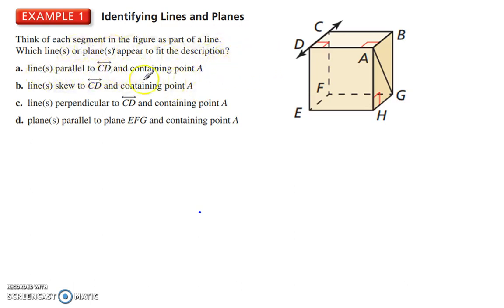Lines that are parallel to line CD containing point A. So we're looking at this point right here. Okay, lines that are parallel to CD. Okay, there are other lines that are parallel. EF, HG, and AB are all parallel to CD. However, the only one containing A is line AB.